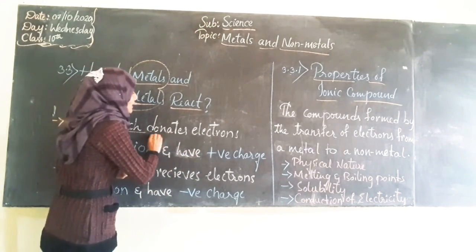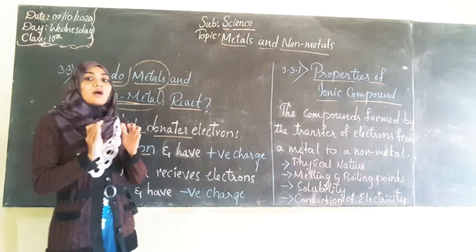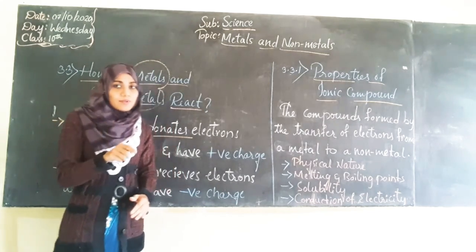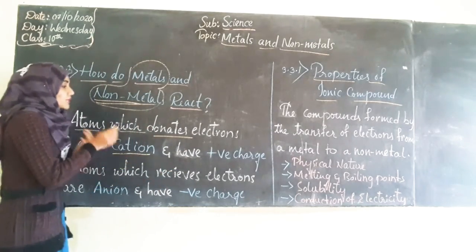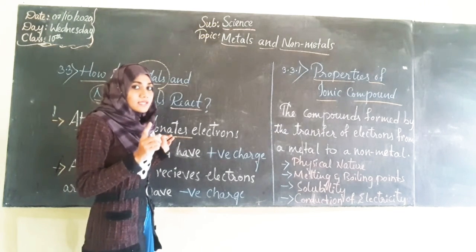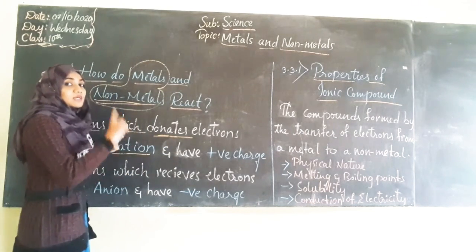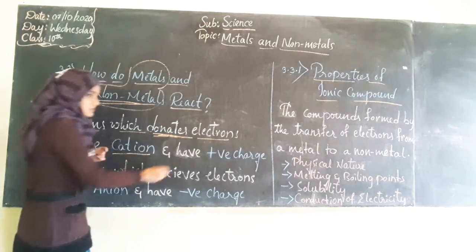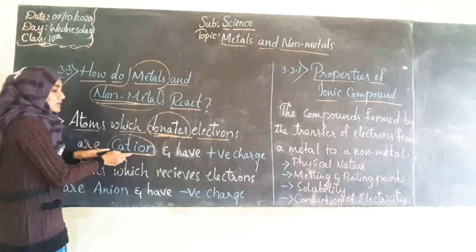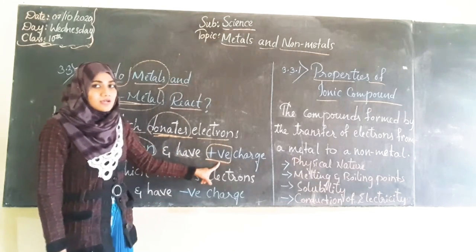Atoms which donate electrons are called cations. You know that all elements are made up of atoms. The elements or atoms of elements which donate — donate means which give — electrons are called cations. The atoms which donate electrons are called cations, and they will be having a positive charge on them.